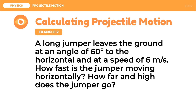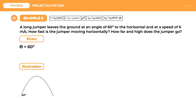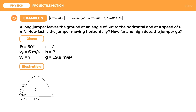For the second example: a long jumper leaves the ground at an angle of 60 degrees to the horizontal and at a speed of 6 meters per second. How fast is the jumper moving horizontally? How far and how high does the jumper go? The given values are: angle of release is 60 degrees and initial velocity is 6 meters per second. We are asked to solve for three things: horizontal velocity, range, and maximum height. We will include gravity, which has a plus or minus sign depending on the direction of the projectile.